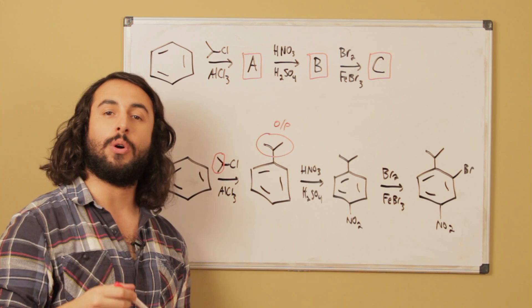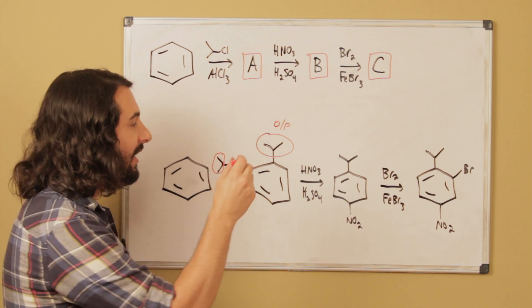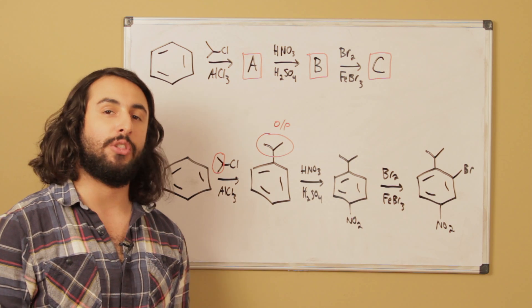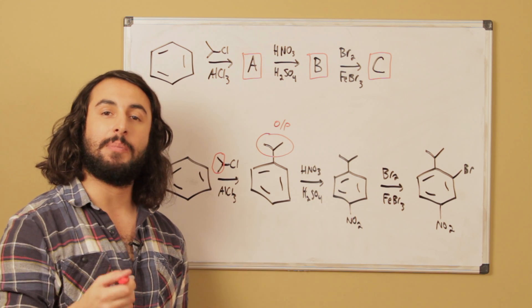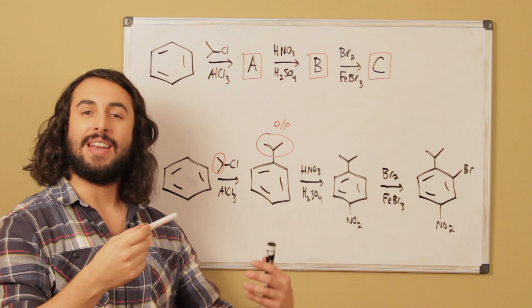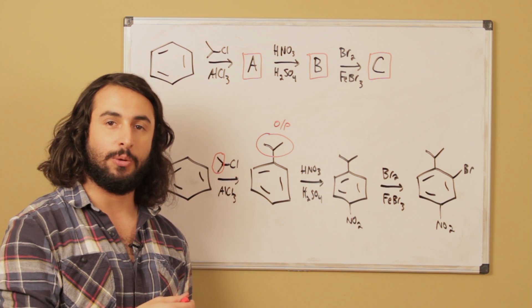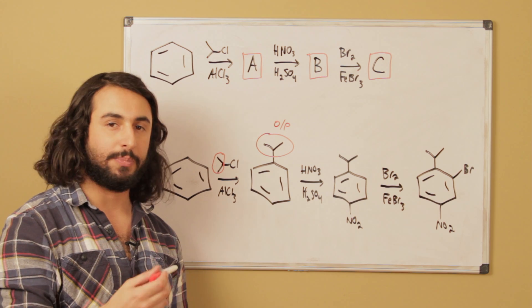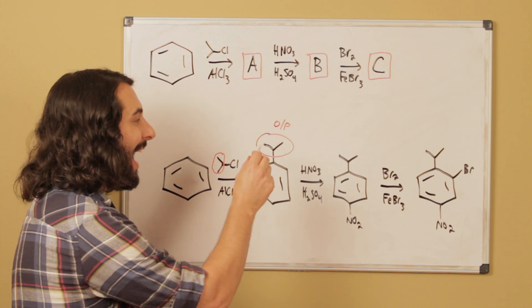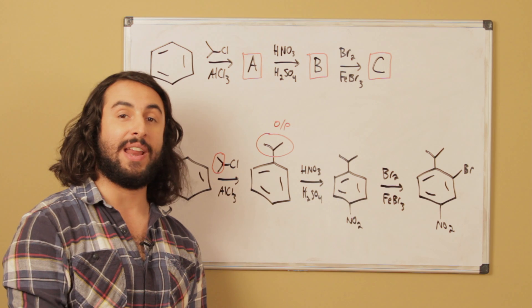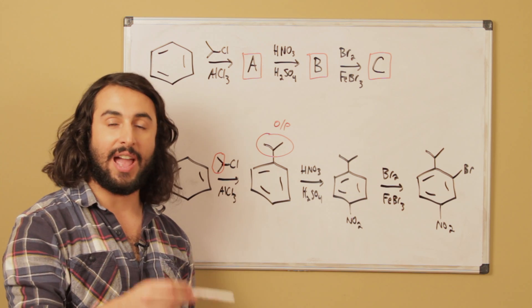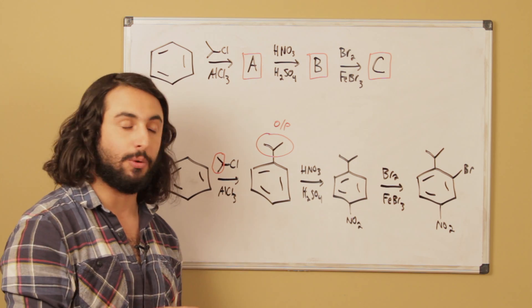Once again to reiterate, in terms of ortho-meta-para directing groups, it is the group that is already on the ring that directs the incoming electrophile to its position, not the other way around. In other words, it does not matter that the incoming group is a nitro group and that nitro groups are meta directors, because it is the alkyl group on the ring already that is doing the directing and is informing where the incoming group has to go.